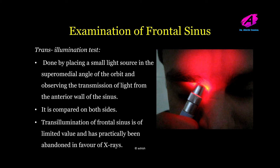The transillumination test for the frontal sinus is done by placing a small light source in the superomedial angle of the orbit and observing the transmission of light from the anterior wall of the sinus. It is compared on both sides. Transillumination of the frontal sinus is of limited value and has practically been abandoned in favor of X-rays.